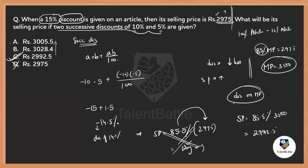So to summarize: first find the successive discount using the formula — after a decrement of 14.5%, the final selling factor is 85.5%. Then find the mark price using the first given condition, and apply 85.5% of the mark price to get the correct selling price. Hope you understood this approach.